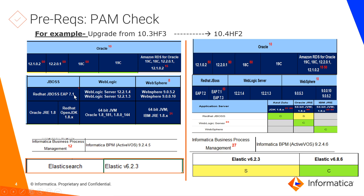For the app server, 10.4 hotfix 2 supports JBoss 7.3 and 7.2 in addition to 7.1, so you can move if your company no longer allows 7.1. For JDK, both Red Hat and Oracle JRE 1.8 are supported, and additionally Zulu is supported in 10.4 hotfix 2. If your organization has security or license concerns with Oracle JDK and wants to move to Azul Zulu, the shipping team will provide that JDK. For WebLogic, 12.2.1.4 and 12.2.1.3 are supported, and WebSphere requirements remain compatible.